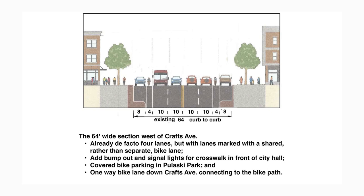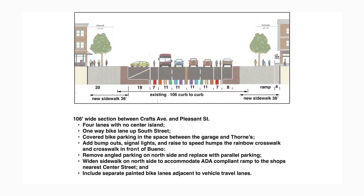Moving into the next middle section — the 106-foot wide section between Crafts Ave and Pleasant Street — which is already four lanes. The change would be four lanes with no center island; the space in the middle would be eliminated, and the four lanes would be clearly painted and delineated. The design proposed by the city would shrink this to one lane in each direction with a center turning lane, and I'll address the traffic density issues that would create.